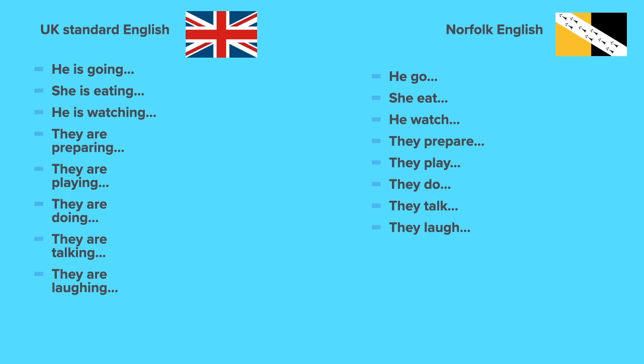For more examples: 'he is going' becomes 'he go'; 'she is eating' becomes 'she eat'; 'he is watching' becomes 'he watch'; 'they are preparing' becomes 'they prepare'; 'they are playing', 'they play'; 'they are doing', 'they do'; 'they are talking', 'they talk'; 'they are laughing', 'they laugh'. This also makes it easiest to look things up, because 'go', 'eat', 'watch', 'prepare', 'play', 'do', 'talk', 'laugh' — they're all the infinitive, which is the form we'll find in the dictionary.